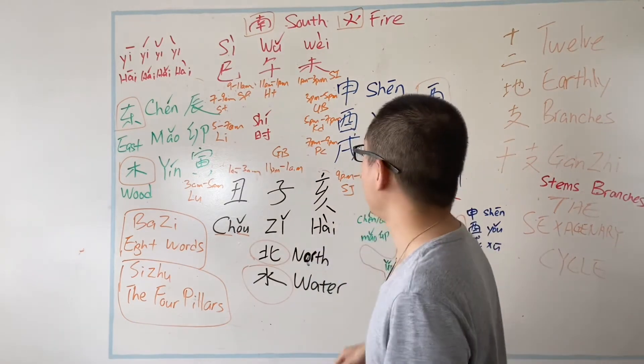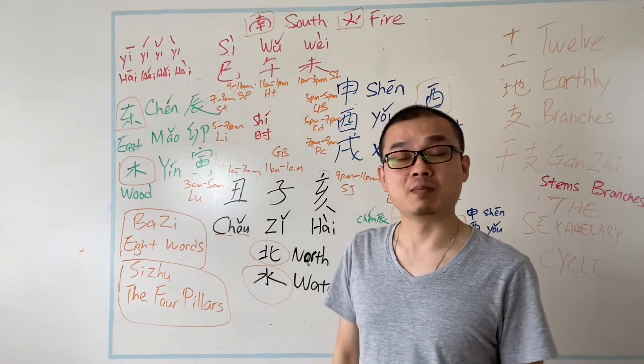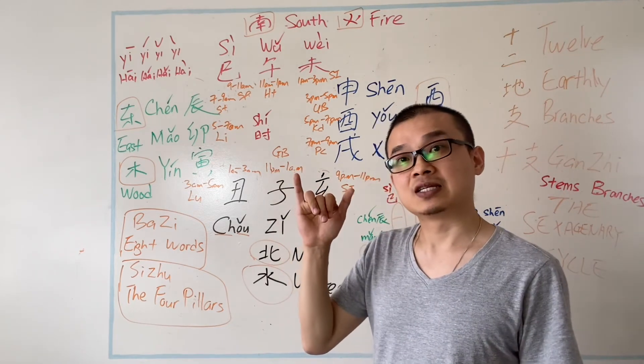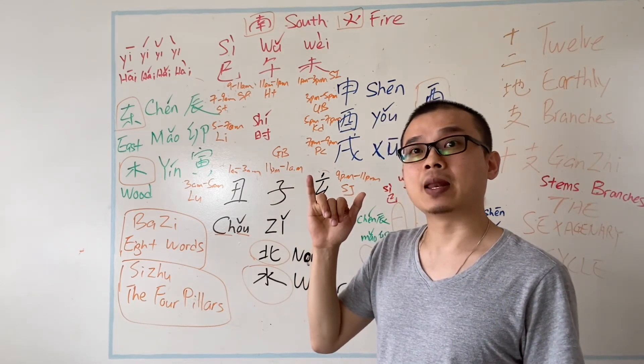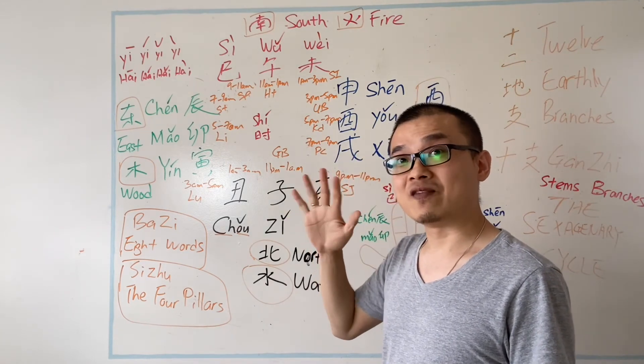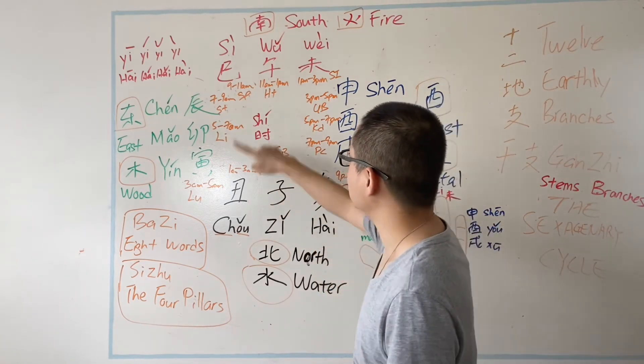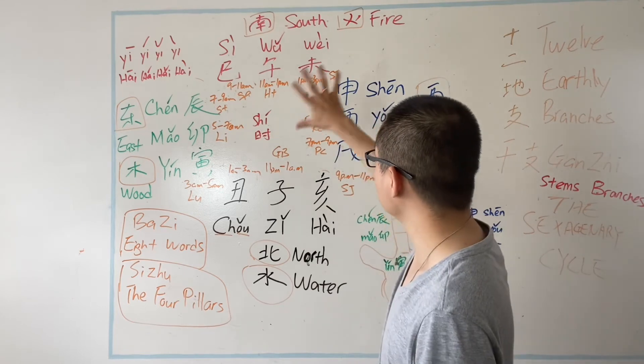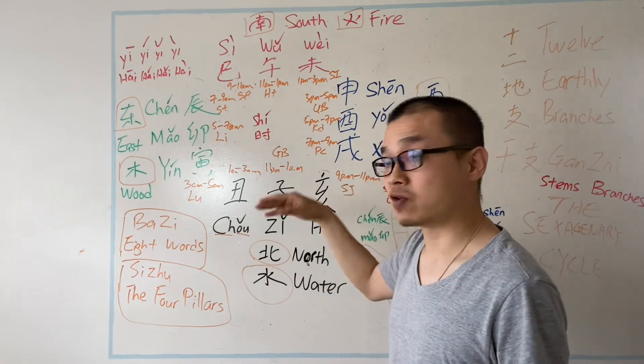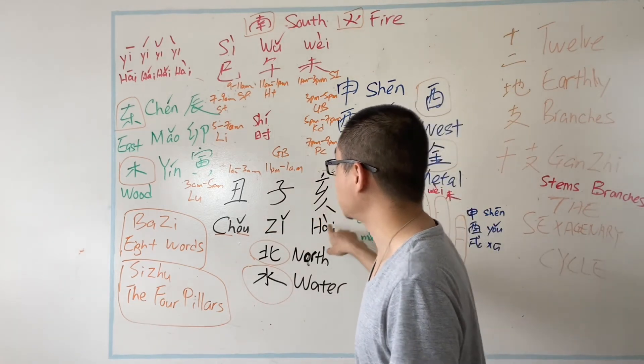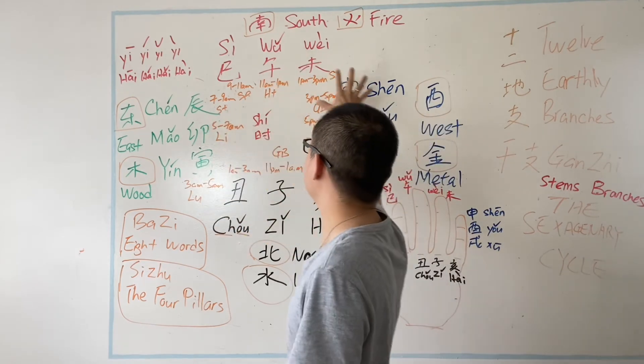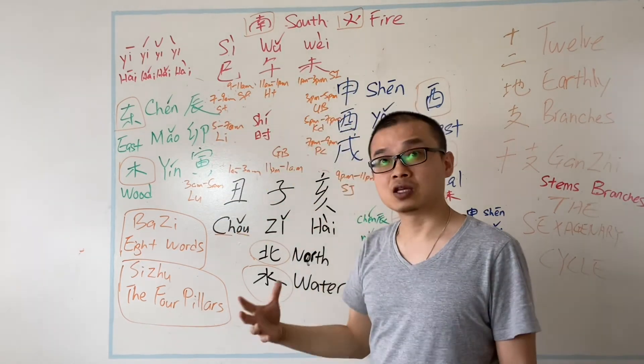In balance method acupuncture, we have six different systems, and two system four and five system actually come from this. Now once you know this, I'm going to show you in the next few videos how to do san he, san hui, and this you can treat it using this to treat it as well.